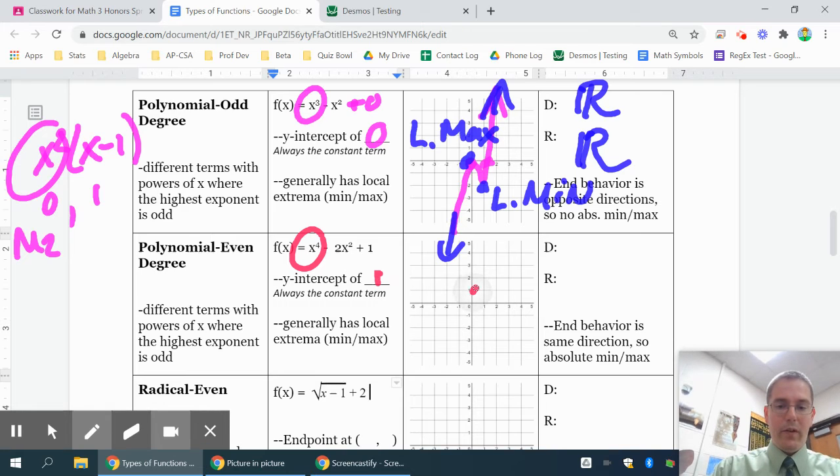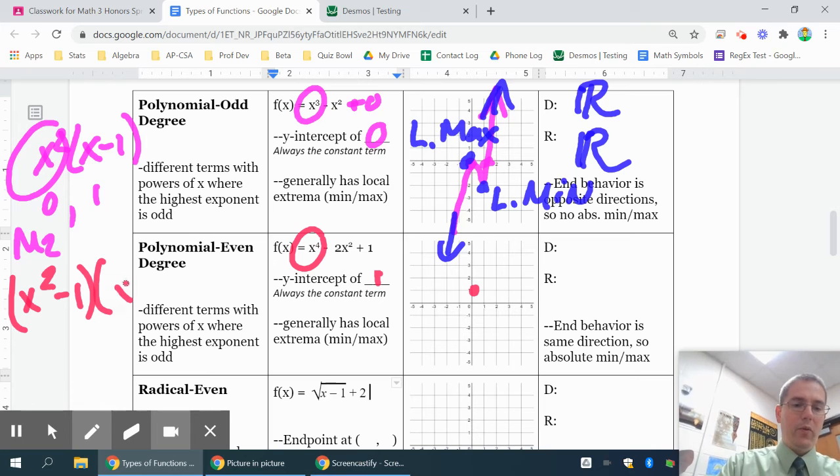And if I wanted to graph this, I could try factoring it, which would factor as an x minus 1 and an x minus 1. And each of those would factor as an x plus 1, x plus 1. I won't take the time to write it twice because they'll give me the same factors.